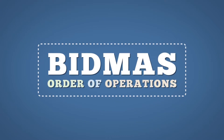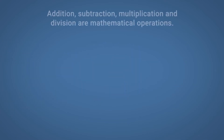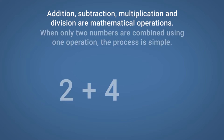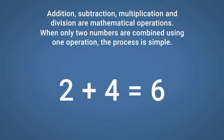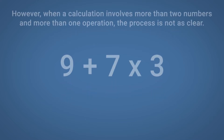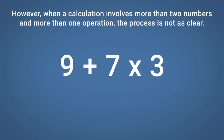BIDMAS, or order of operations. Addition, subtraction, multiplication and division are mathematical operations. When only two numbers are combined using one operation, the process is simple. However, when a calculation involves more than two numbers and more than one operation, the process is not as clear.